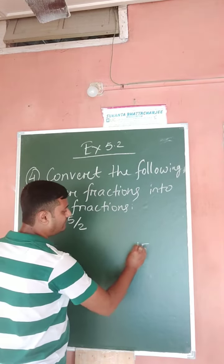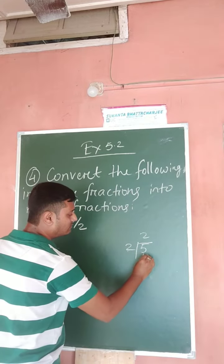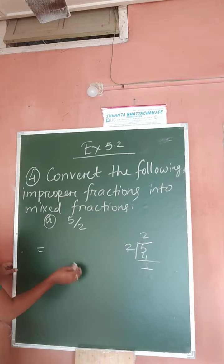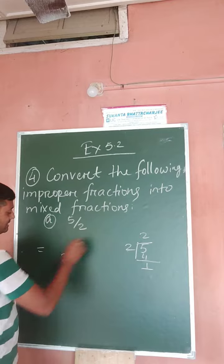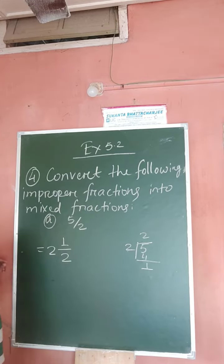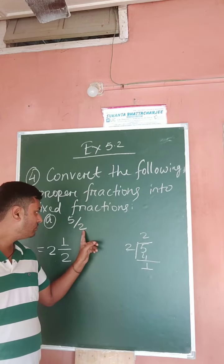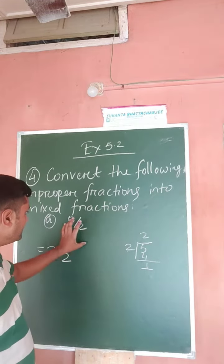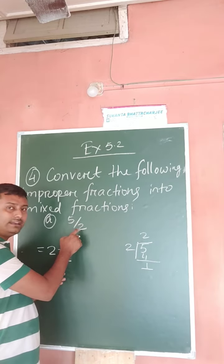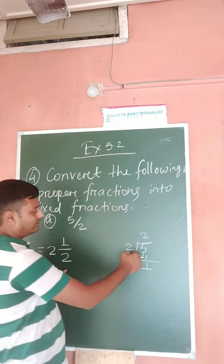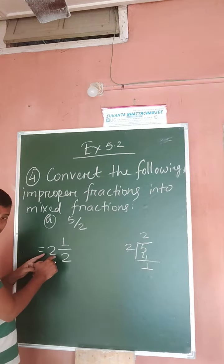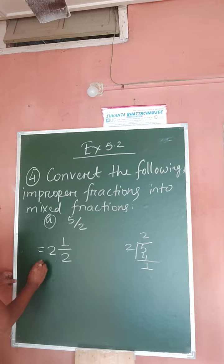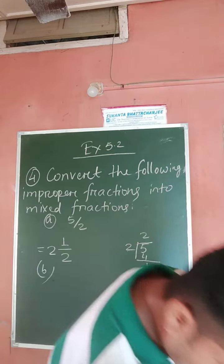So 5/2 is given. You just divide five by two — two twos are four, remainder is one. The denominator remains the same, so you write the quotient as two and the remainder as one. Remember: the number in the denominator remains the same, which is two. When you divide five by two, the quotient becomes two and the remainder becomes one, so the mixed fraction is written accordingly.